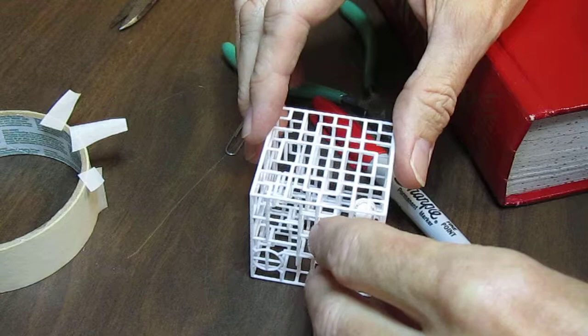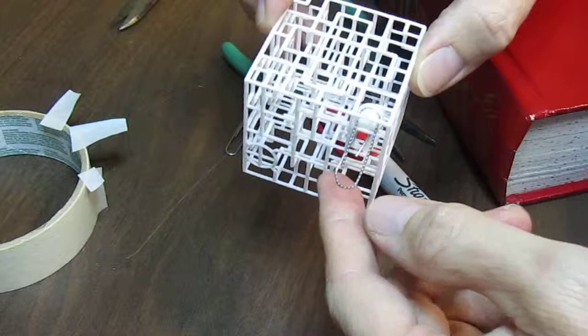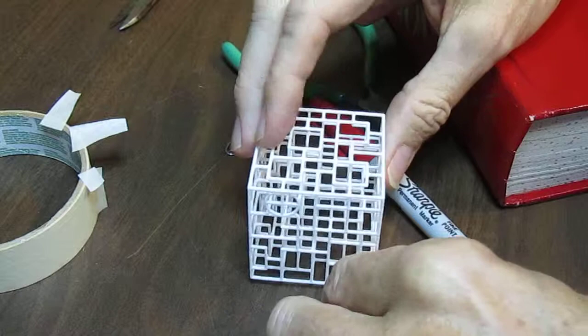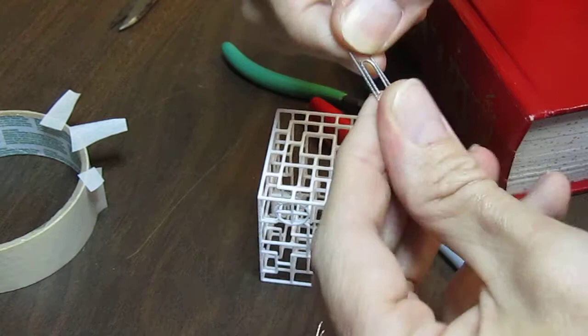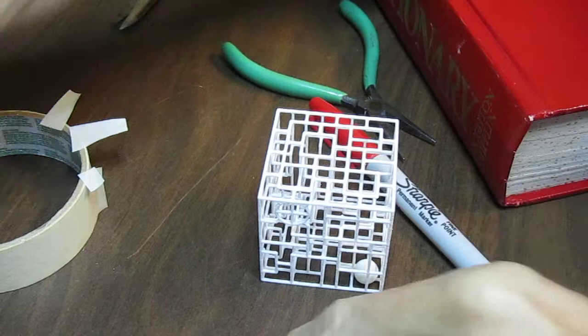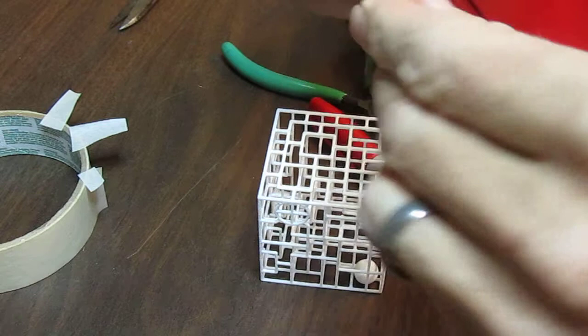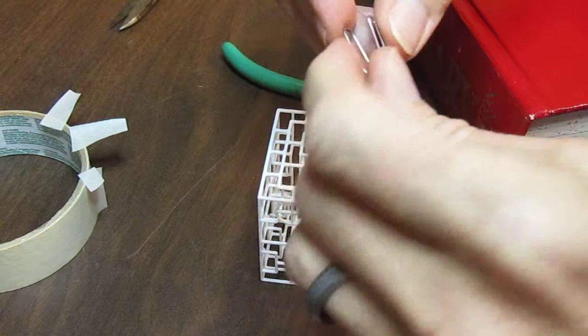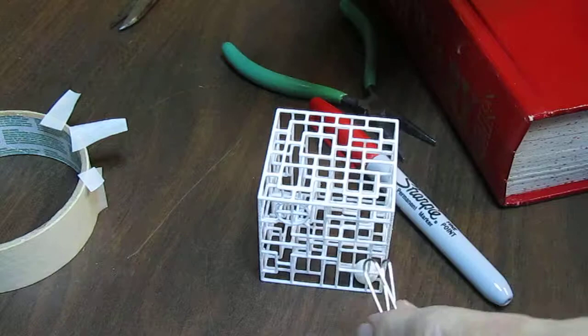I'm going to use a Sharpie to color it, but one thing you need to do is find a way to hold the ball while you're coloring it. One thing that works well is a paper clip. I'm going to show you how to use that. You take a regular small paper clip and you bend it open. Oh, that one broke. You bend it open and then you bend it back so the two ends almost meet. Then you have a nice little spring clip.